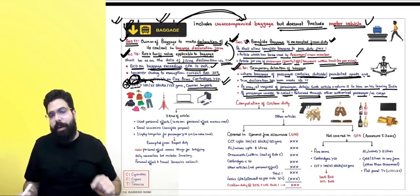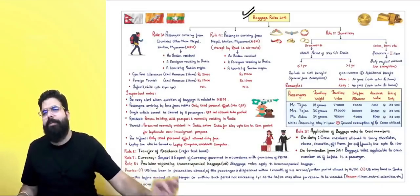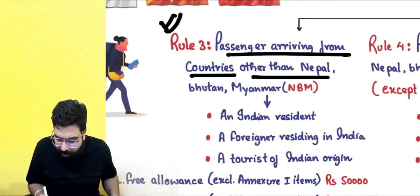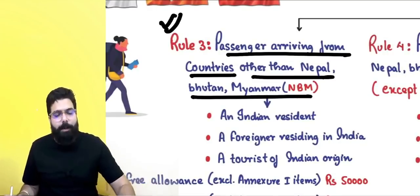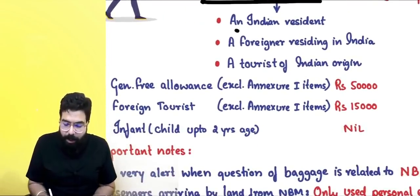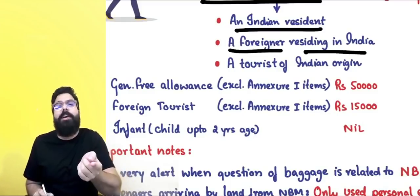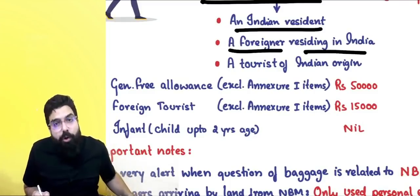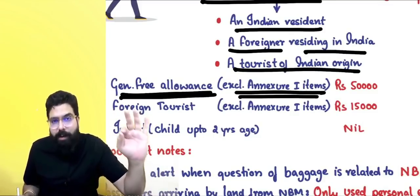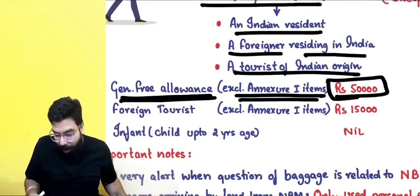Now we learn the Baggage Rules 2016. Rule 1 gives the name, Rule 2 gives definitions. Rule 3 states: if you are a passenger arriving from countries other than Nepal, Bhutan, and Myanmar, and you are an Indian resident, a foreigner residing in India, or a tourist of Indian origin, the general free allowance is ₹50,000 (excluding extra items not allowed in GFA).